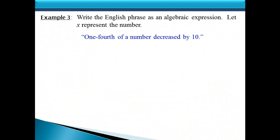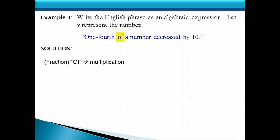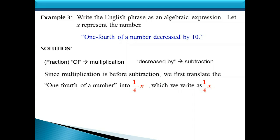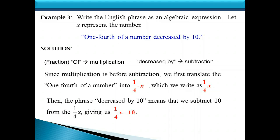Next phrase: 1 fourth of a number decreased by 10. The word of preceded by the fraction 1 fourth translates to multiplication. Decreased by represents subtraction. Since multiplication comes before subtraction, we first translate 1 fourth of a number into 1 fourth x. Then decreased by 10 means we subtract 10, giving us 1 fourth x minus 10.